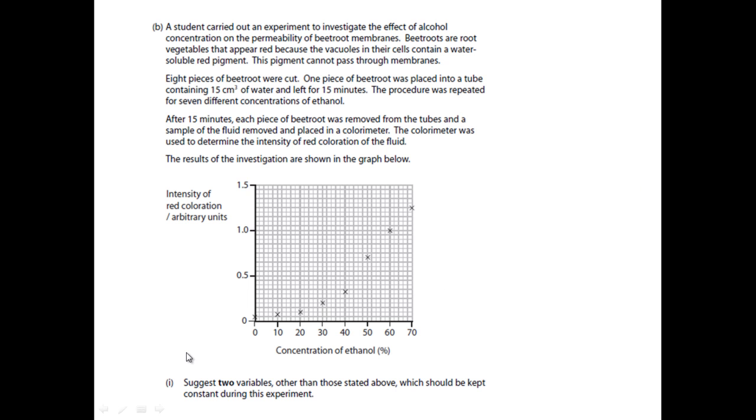The question states suggest two variables other than those stated above which could be kept constant during the experiment. If you actually look at the text first and we see some of the things that have actually kept constant, some of the things like one piece of beetroot was placed into a tube containing 15 cm³ of water and left for 15 minutes, so those were all controlled.